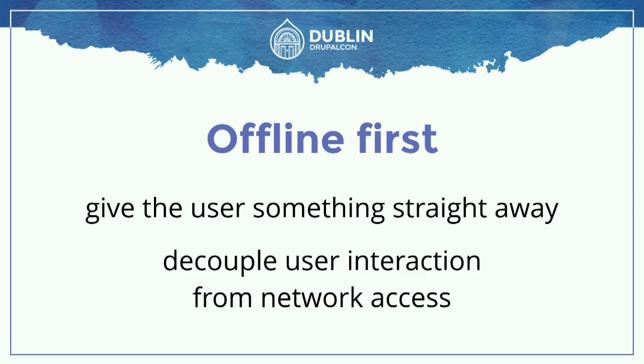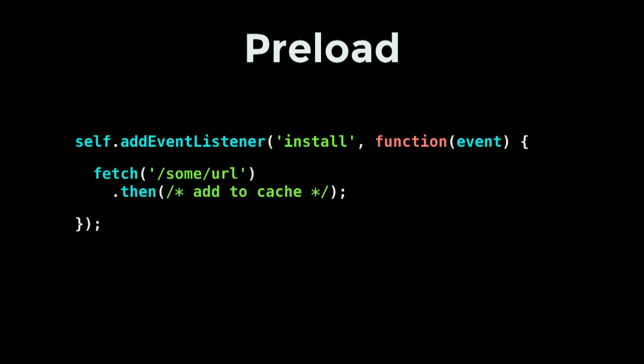If we really want a good user experience, we can try to decouple the user's interaction from slow network requests. When somebody presses a link, they get something straight away. To do that, we need to load some things in advance. Looking at the install event, all we need is the fetch API and cache API — get some URLs and put them in the cache. Once someone visits the website, those resources are downloaded and always available going forward.